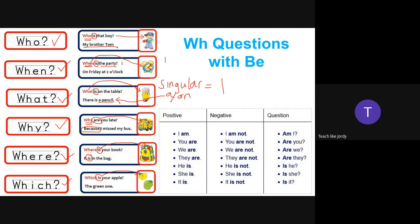There is actually one more WH question word: 'how' — bagaimana. The rule is the same. 'How are you?' Here 'are' is used because I'm asking many students. 'How are you?' And then 'how is it?' Now let me also give you an explanation about subjects and the verb 'to be'.